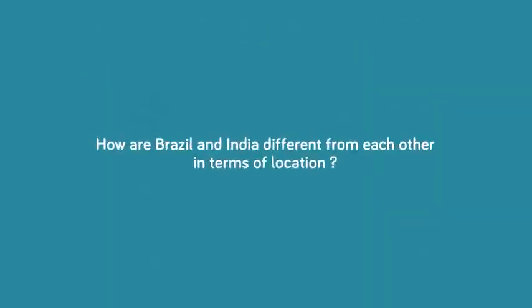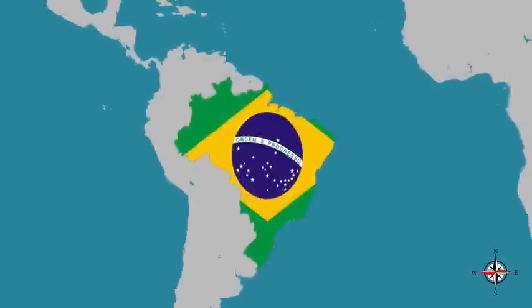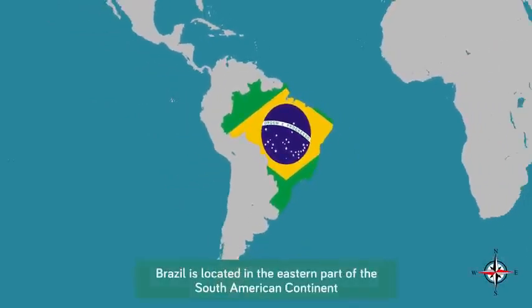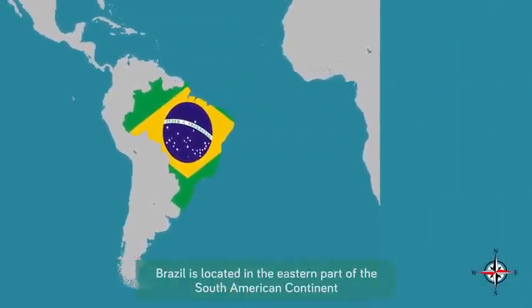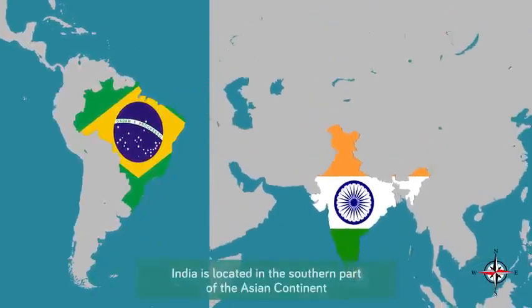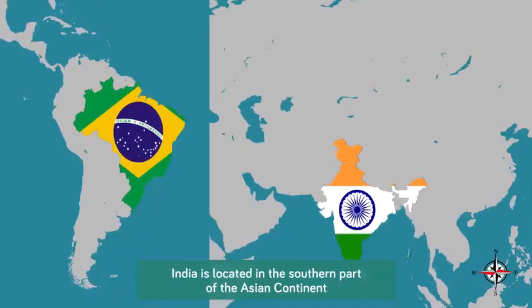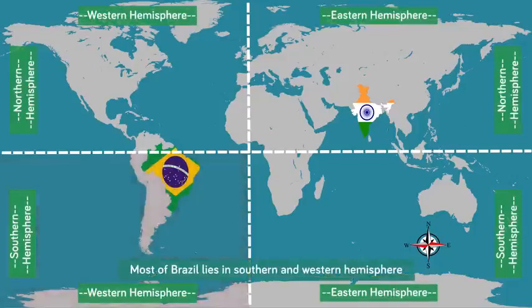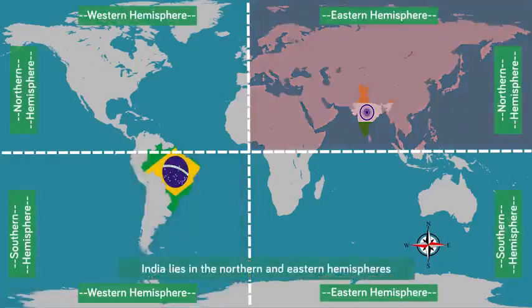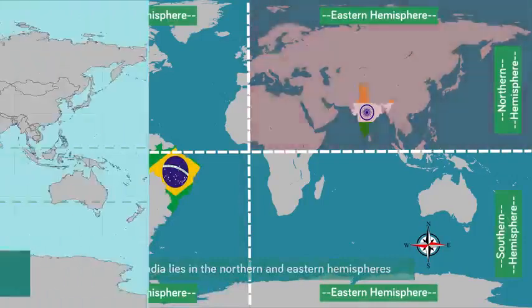How are Brazil and India different from each other in terms of location? Brazil is located in the eastern part of the South American continent, while India is located in the southern part of the Asian continent. Most of Brazil lies in the southern and western hemispheres, whereas India lies in the northern and eastern hemisphere.